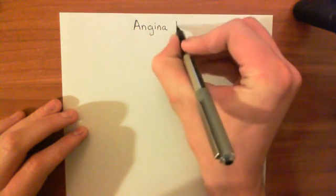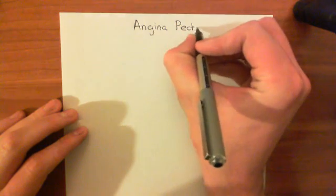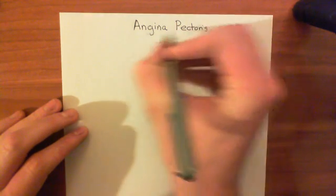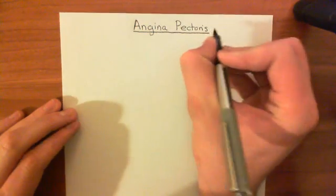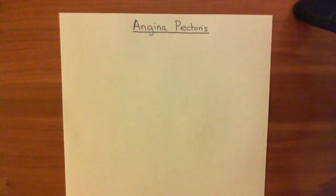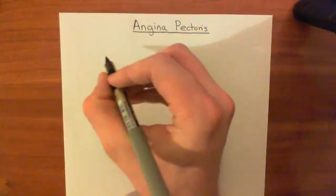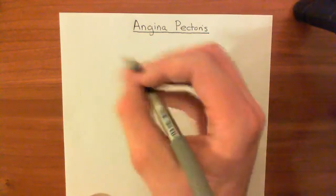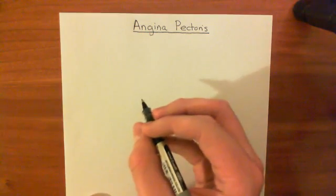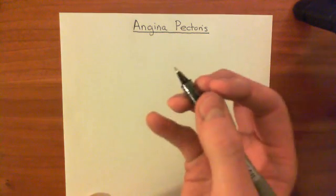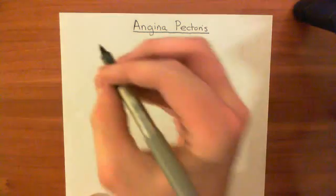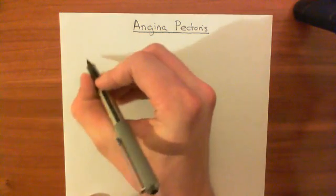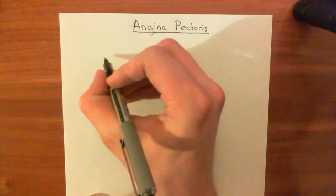Angina pectoris is often just referred to as angina. We're going to begin with a revision of the structure of the heart, just so we know what we're dealing with. I'm going to draw two pictures of the heart: one which is a physiologist's picture, and one which is closer to what you actually see if you open up a human — an anatomist's picture — and compare the two.